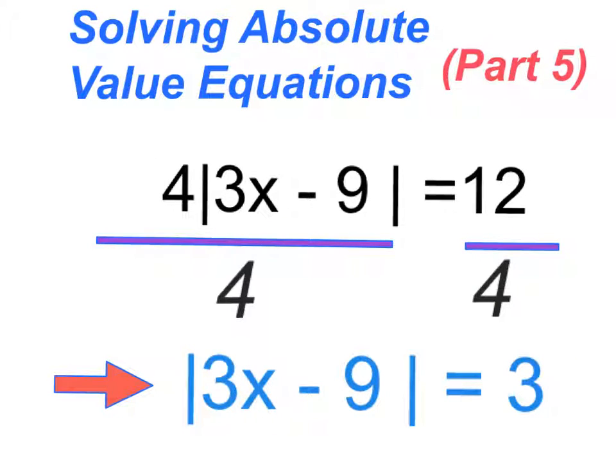My second step I have to do is get rid of the four in front of the absolute value symbol by doing the opposite. And the opposite of multiplying by four is dividing by four. So when I take both of these sides and divide it by four, I get the absolute value of three X minus nine is equal to three.